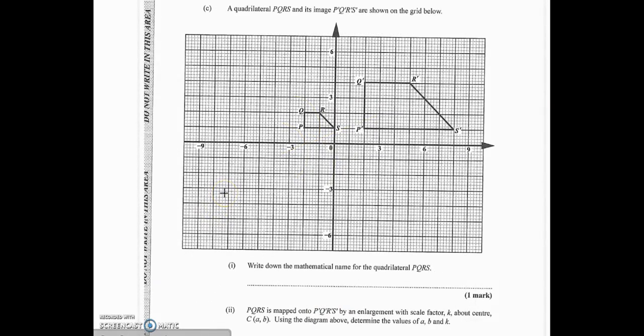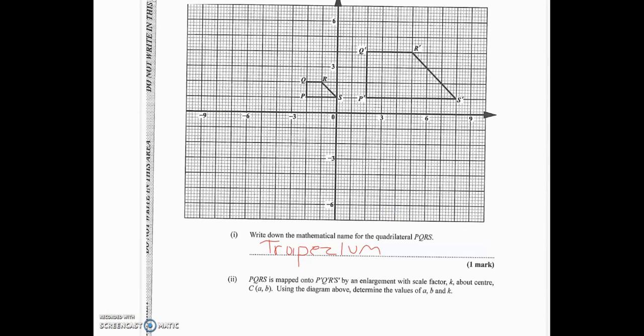We now move to part C of question 3 and it says a quadrilateral PQRS and its image P'Q'R'S' are shown on the grid below. So here is what we call the object PQRS and here's what we call the image P'Q'R'S' and it says write down the mathematical name for the quadrilateral PQRS. Now there's one thing that is distinctive about this particular quadrilateral and that is that it has only one pair of parallel sides and there's only one kind of quadrilateral with only one pair of parallel sides and that is what we call a trapezium. So we're just gonna write it right here. Some persons also refer to it as a trapezoid so whichever one works.